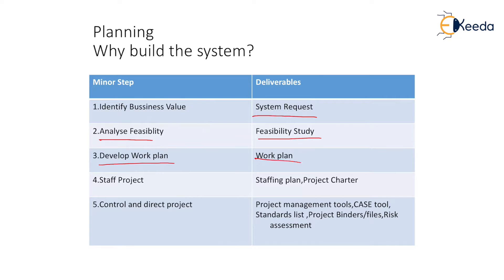In the fourth step we have to follow the staff project — like how many staffing we require, what staff we require for what department, and what type of skills that staff should have. And fifth is control and direct the project. For that we have to decide like project management tools, case tools, standard list, project binder or files, and some risk assessment — like which we are going to follow. Like that we can plan at the time of the planning stage.